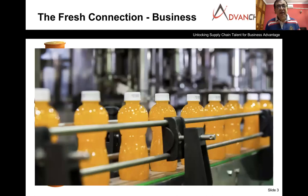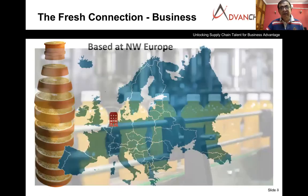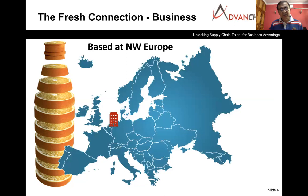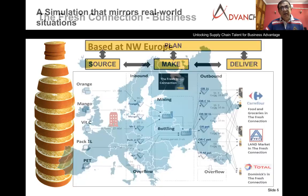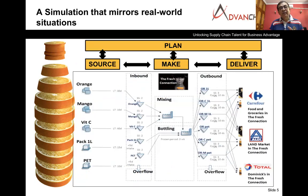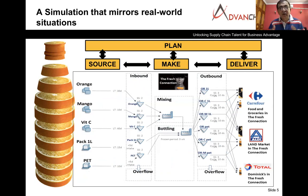Let me give you some introduction about the company in the case. The name of the company is the Fresh Connection. The company is in manufacturing of fruit juices and is based in Europe — specifically the Netherlands. There are four macro processes in the company's supply chain: source, make, deliver, and plan. The company does not have a return process.